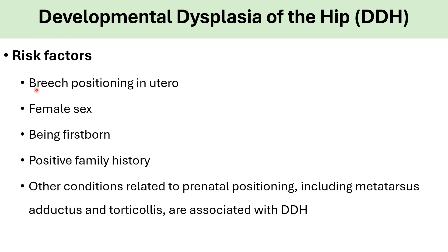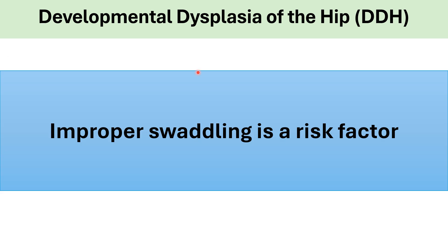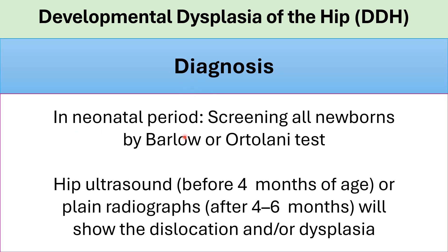Risk factors of DDH: breech positioning in utero or breech presentation, especially in the third trimester; female sex; being first born; positive family history — it's very important to ask about family history of DDH. Other conditions related to prenatal positioning or narrowed uterus: metatarsus adductus and torticollis are commonly associated with DDH. Improper swaddling is another important risk factor.